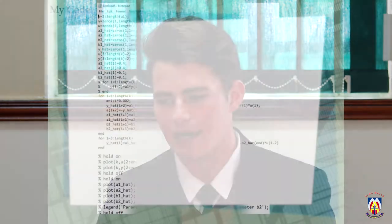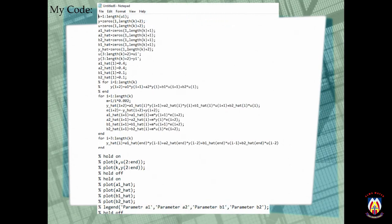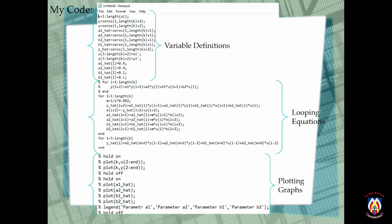So then we were supposed to loop our mathematical model so that we can obtain a large set of results. And as the screen shows, it is my code. The first part is basically just my variables and what it defines. The second part is me looping the equations. And then finally, it's me plotting the graphs.